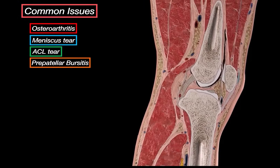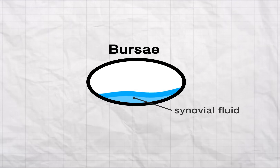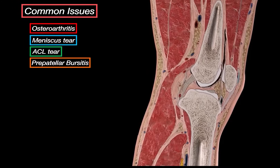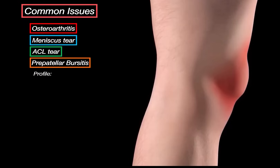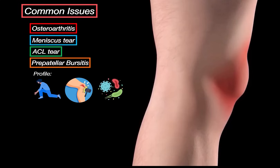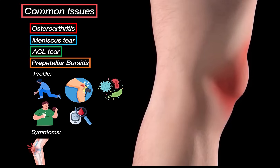Finally, let's talk about prepatellar bursitis. The prepatellar bursa sits just in front of the patella, and when it gets inflamed, the whole area swells up and becomes painful — this is sometimes called housemaid's knee. It often happens in people who kneel a lot, like plumbers or carpet layers — anyone putting repeated pressure on the front of the knee. It can also be caused by a direct blow or in some cases an infection. Obesity and diabetes increase vulnerability. Symptoms include swelling right over the kneecap, pain with kneeling or pressure, and in infected cases the area might feel warm, look red, and the person might have a fever. Movement becomes painful because the swelling limits how far you can bend the joint.